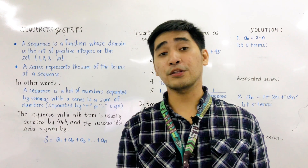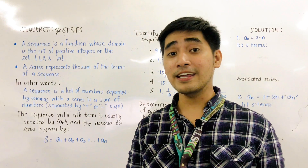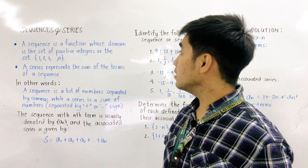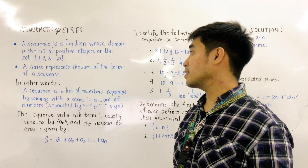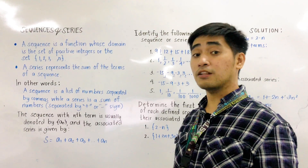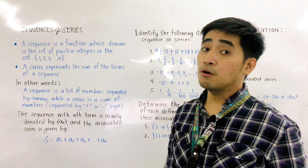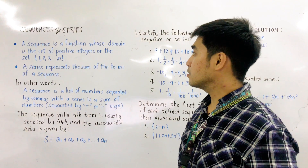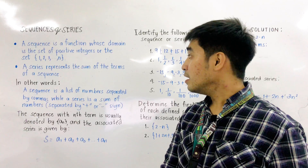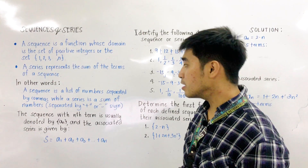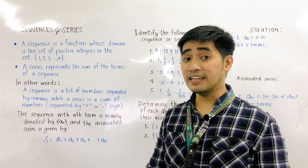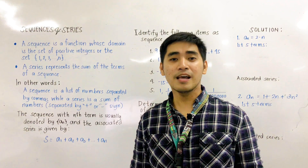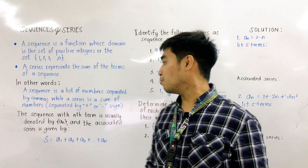Before we discuss our topic for today, let us first define sequences and series. When we say sequences, these are functions whose domain is the set of positive integers, or the set of 1, 2, 3, up to N. While a series represents the sum of the terms of a sequence. In other words, a sequence is a list of numbers separated by commas, while a series is a list of numbers separated by plus or minus.